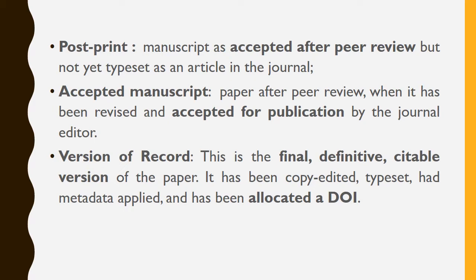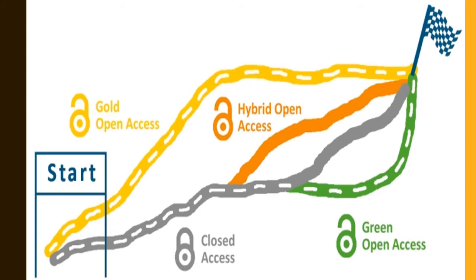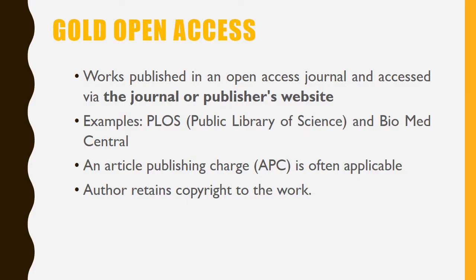You can either have closed access or open access. Within open access, there are different types: gold open access, hybrid open access, and green open access, plus many more which we will discuss. For each type, two important points to check are: one, the article publishing charge — what is the condition regarding that; and two, the copyright issue — what is the condition. If you clearly understand and distinguish these, it becomes easy to remember the various types.